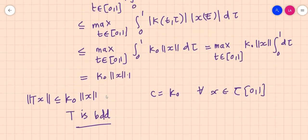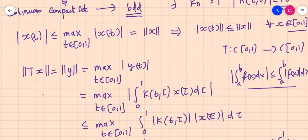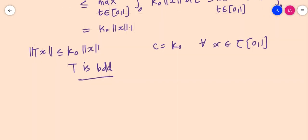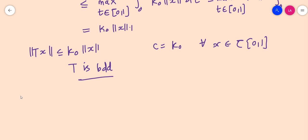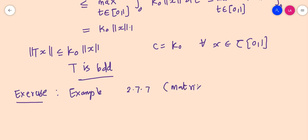Now let's move on. I have one more example as an exercise for you — Example 2.7.7, related to matrices. This is an easy example; you only need to use the Cauchy-Schwarz inequality to establish boundedness. If you have any doubt, you can contact me. I hope you understood this. Thank you.